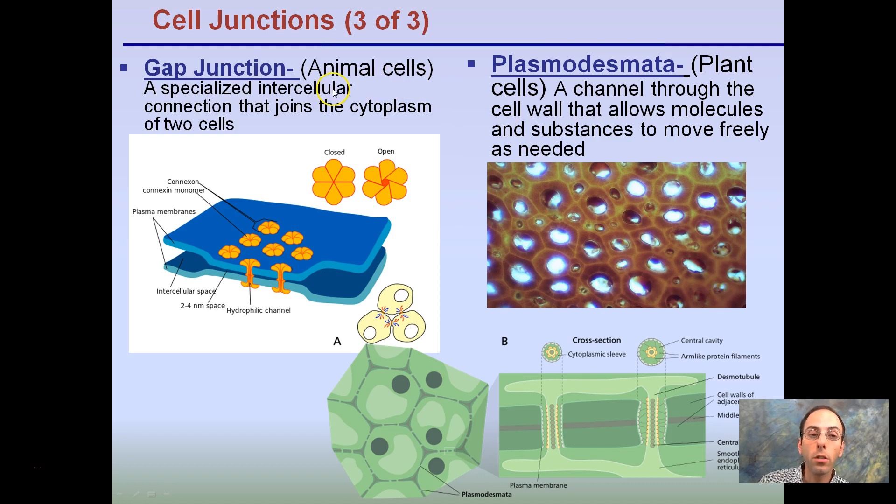The last form of cell junctions would be gap junctions in animal cells. These are specialized intercellular connections that join the cytoplasm of two cells. We see here is one cell down here. This gap junction is this little protein-like channel allowing communication to occur from the lower cell to the upper cell.